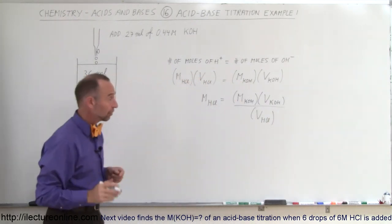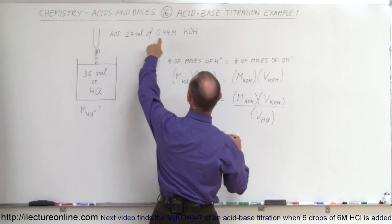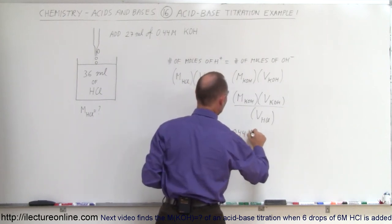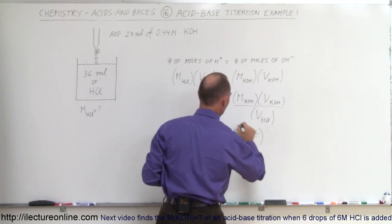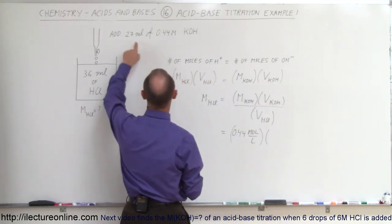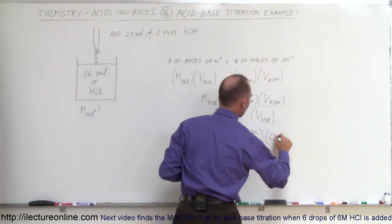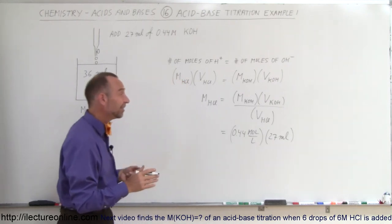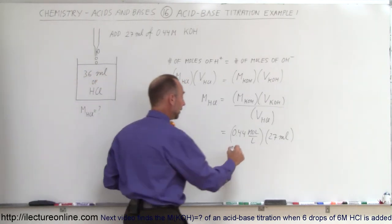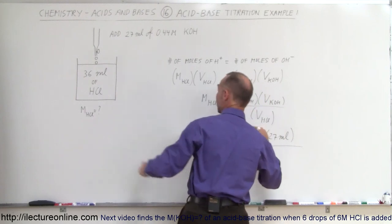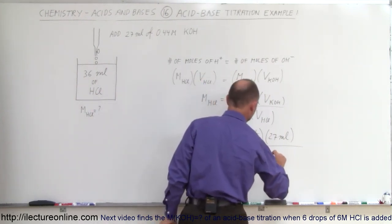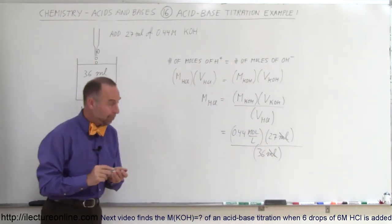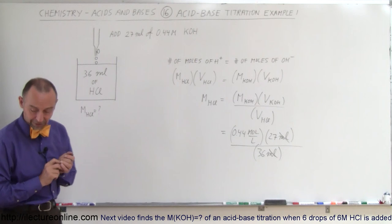Now we're ready to plug in numbers. The molarity of the potassium hydroxide is 0.44 moles per liter, multiplied by the volume of the potassium hydroxide, which is 27 milliliters. You might wonder how we can mix liters and milliliters — since the milliliters are going to cancel out it doesn't matter, because we divide by the volume of hydrochloric acid, which is 36 milliliters. The milliliters cancel out and we're left with moles per liter, which is the molarity of the hydrochloric acid.